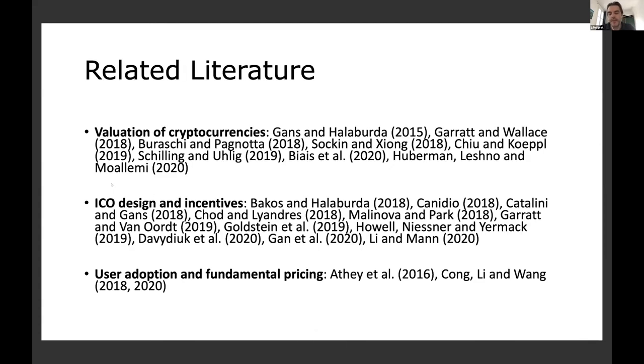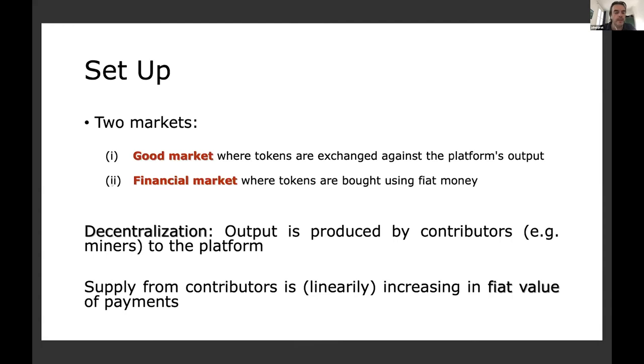So in the interest of time, I will skip the relative literature and directly present the model. Our setup is as follows. We have two markets, a good market where tokens are exchanged against the platform's output, and a financial market where tokens are bought using fiat money. Although tokens can be used outside blockchain, they have been introduced by blockchain because there's this commitment advantage of blockchain where you can commit to the monetary mass of tokens.